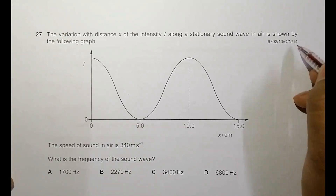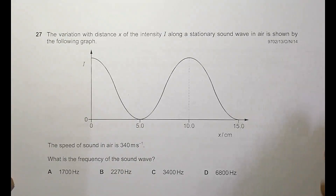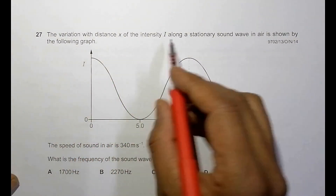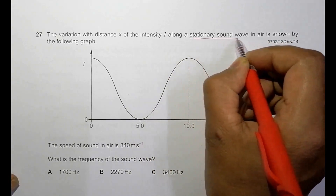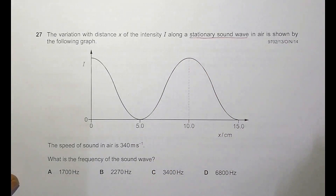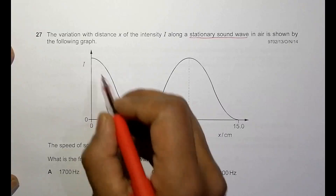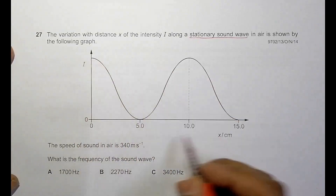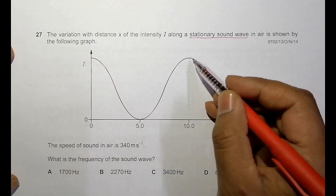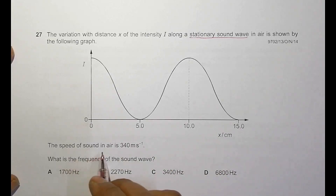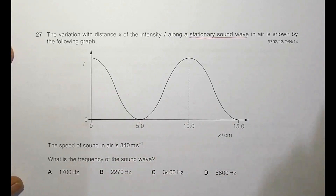This is a 2014 October/November Paper 1 question number 27. It says the variation with distance x of the intensity I along a stationary sound wave in air is shown in the following graph. The pattern shows: at x equal to 0 the intensity is maximum, at 5 centimeters it's minimum, at 10 centimeters it's maximum again, and at 15 centimeters it's minimum again. The speed of sound in air is given as 340 meters per second. The question asks for the frequency of the sound wave.